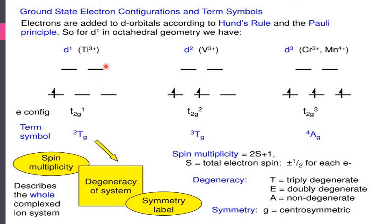For the d1 system in octahedral geometry, electrons start filling from lower energy to higher energy. In octahedral geometry, the t2g set occupies lower energy and the eg set occupies higher energy, because in the six ligands of octahedral complexes approaching the central metal ion, the lobes lying along the axis — the eg set, dx²-y² and dz² — experience more repulsion. The t2g orbitals — dxy, dyz, and dzx — lie between the axes and do not experience repulsion, so they occupy lower energy.